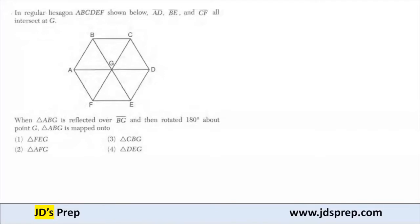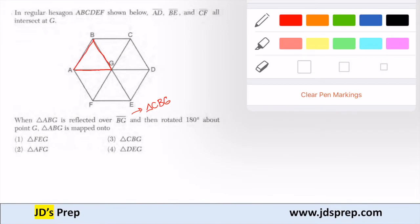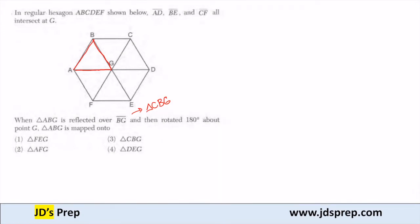We're taking triangle ABG and reflecting it over BG. When you reflect it over BG, that results in triangle CBG. So when this gets reflected across the line, A goes to C, B goes to itself, and G goes to itself. So then we get triangle CBG.